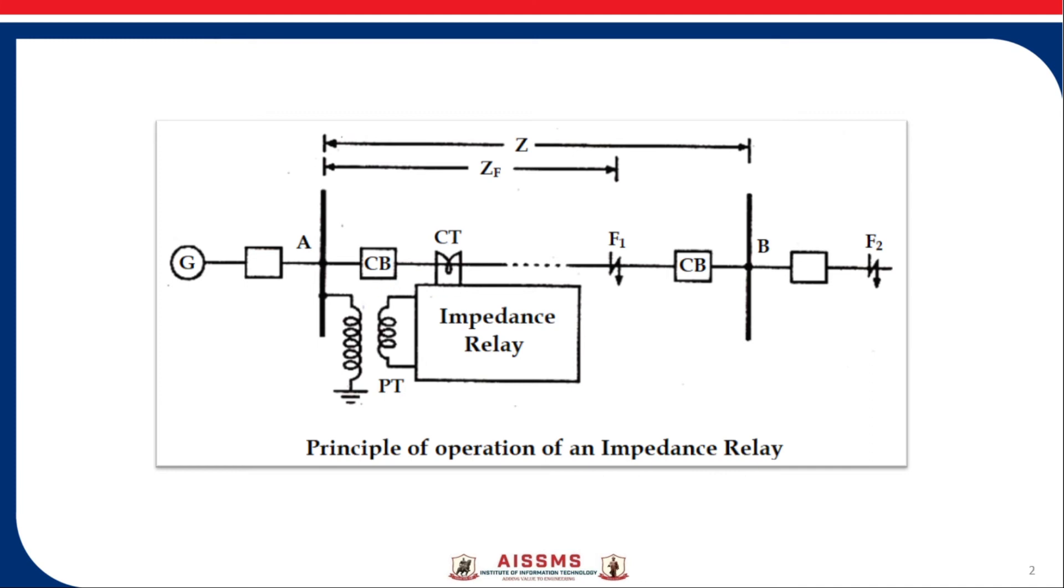This figure shows the basic principle of operation of impedance relay. The voltage element of the relay is excited through potential transformer PT from the line to be protected. The current element of the relay is excited from CT in series with the line. The portion AB of the line is protected zone.